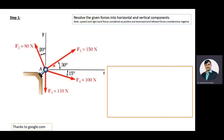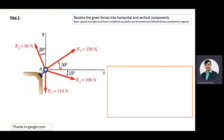Here we are considering upward as well as rightward forces as positive, and downward as well as leftward forces as negative. Force F1 has a magnitude of 150 newton and it is making an angle of 30 degrees to the X axis. We will resolve F1 into its horizontal and vertical components: the horizontal component becomes 150 cos 30 degrees and the vertical component becomes 150 sin 30 degrees.